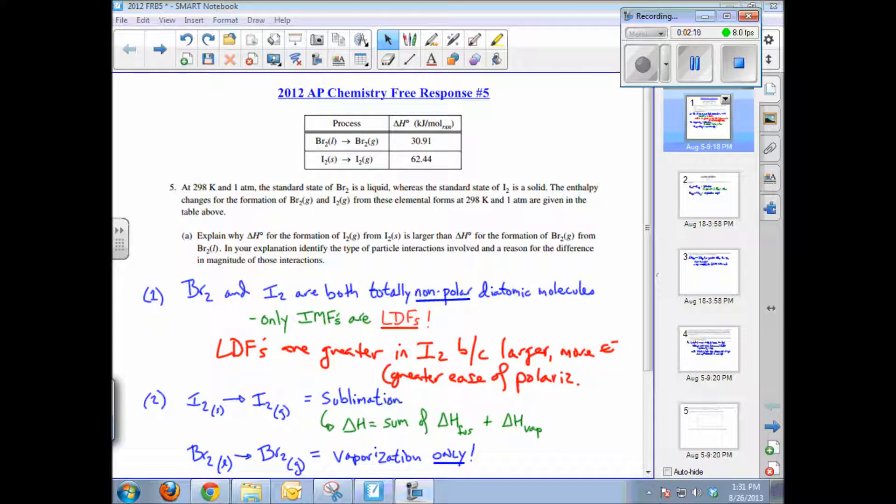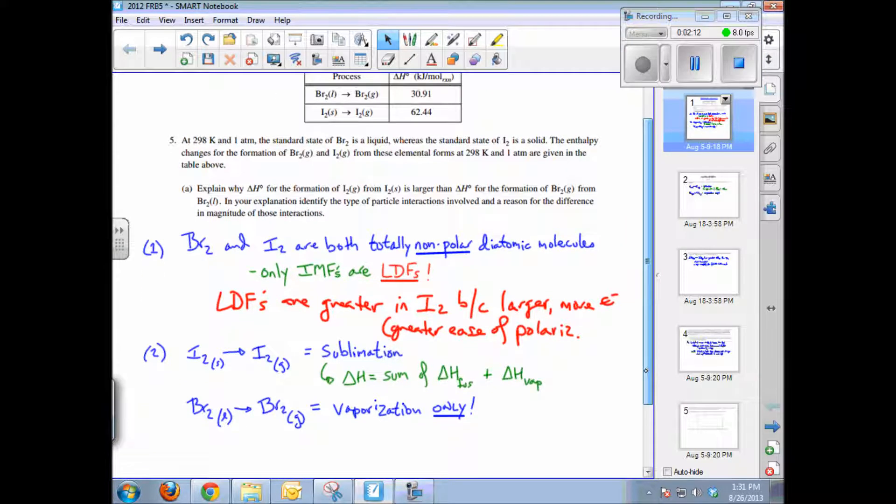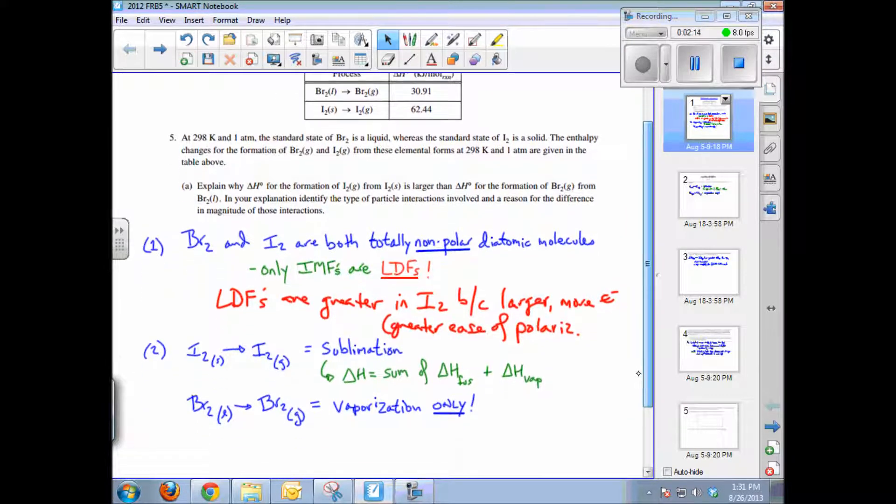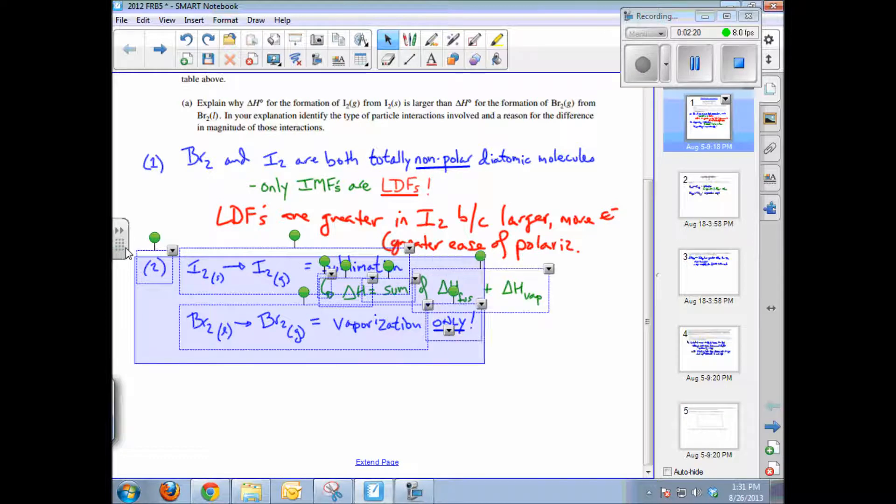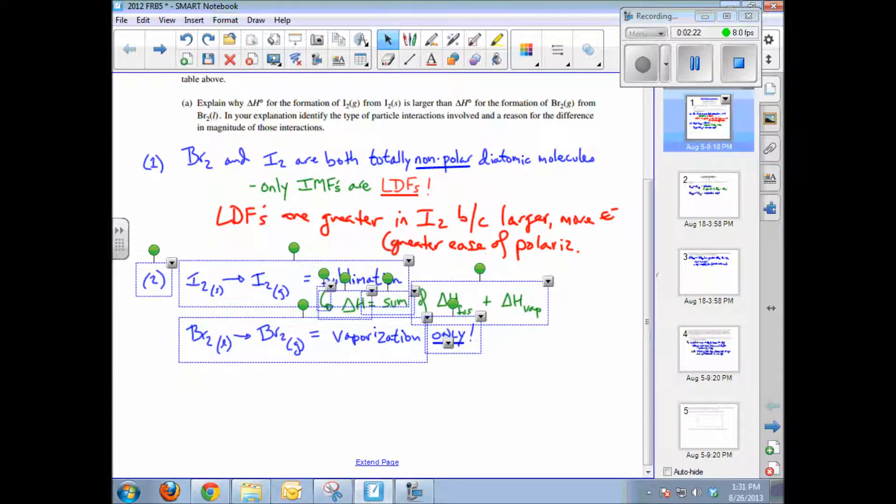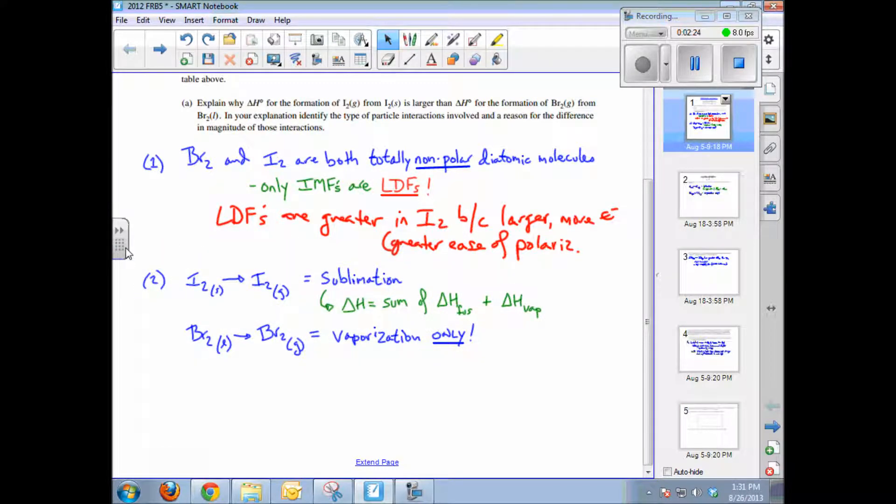Another possible correct explanation for the differences in delta H formation of the gases is shown in answer number two, written here, based primarily on the phase changes. If you notice, the iodine goes from a solid to a gas. That's sublimation. So the total delta H would be the sum of the delta H of fusion plus vaporization.